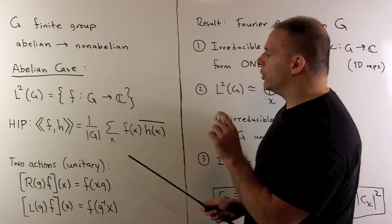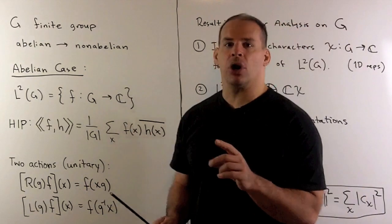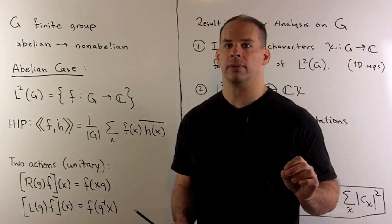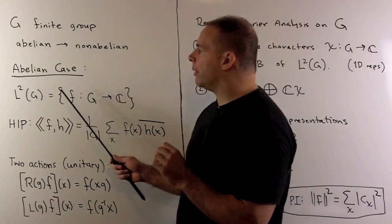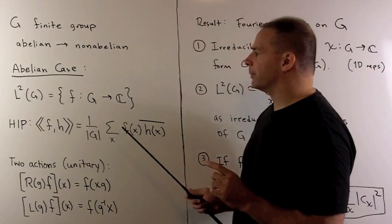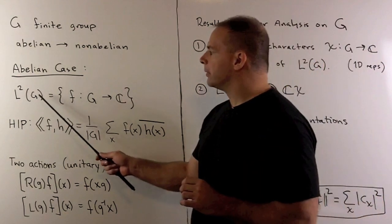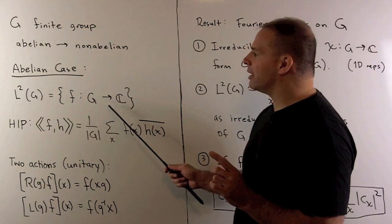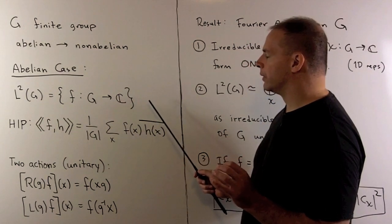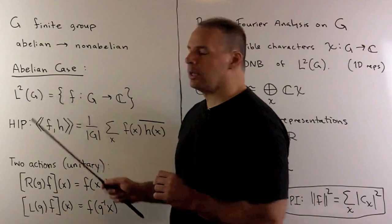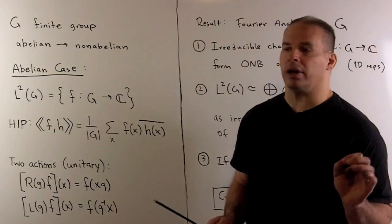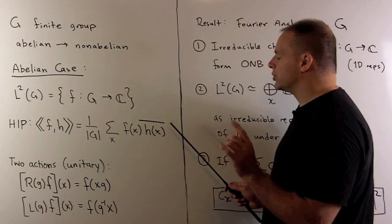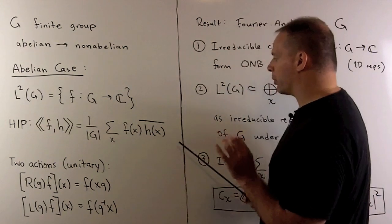On the other hand, I want to use this entire set of functions to capture all irreducible unitary representations of G in a certain sense. Now, let's recall the big picture for the abelian case. I start with L2 of G — the set of all functions from our group to the complex numbers. Because G is finite, this is a finite dimensional vector space. I use the notation L2 of G to indicate that we have a Hermitian inner product. So if we have two functions F and H, I can define their inner product as follows — we're taking some sort of averaging operation.